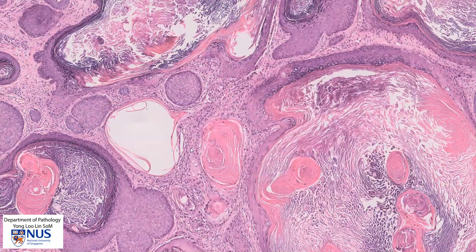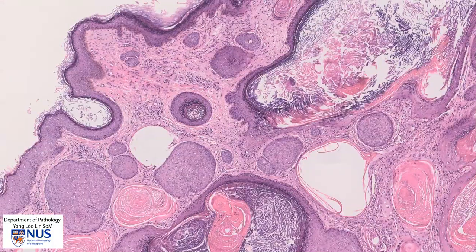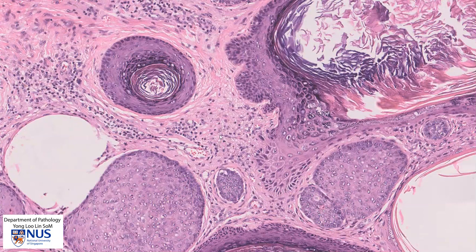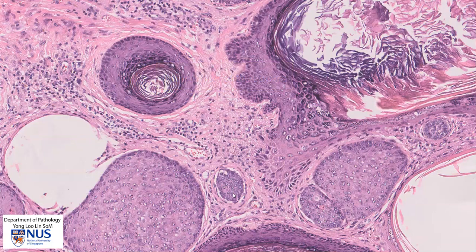We can also appreciate that the stroma around these nests or islands of infiltrating squamous cells appears to be quite cellular and quite disturbed. There are more inflammatory cells and also spindled myofibroblasts in the stroma, and this is evidence of stromal desmoplasia. Desmoplasia is often seen accompanying invasive epithelial tumors.